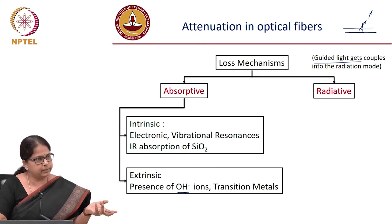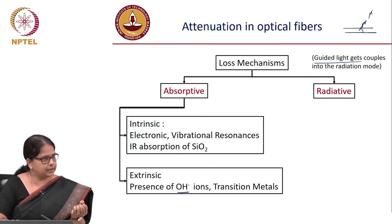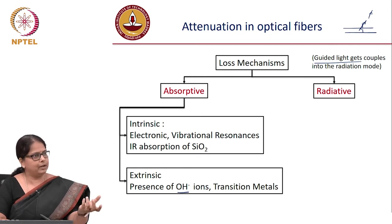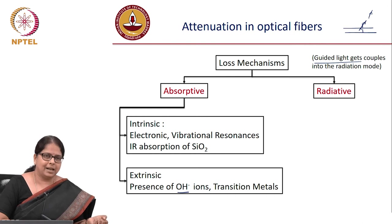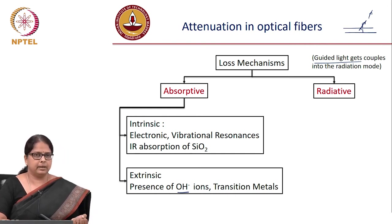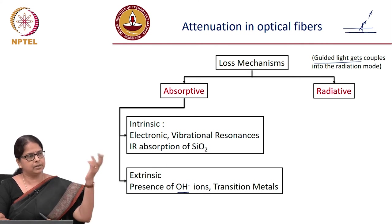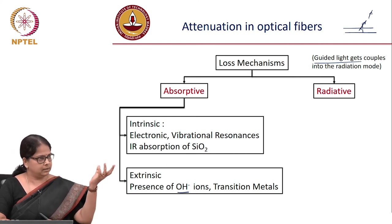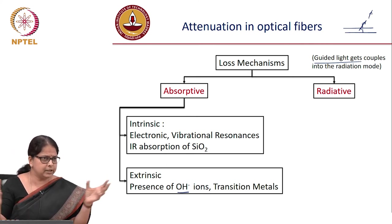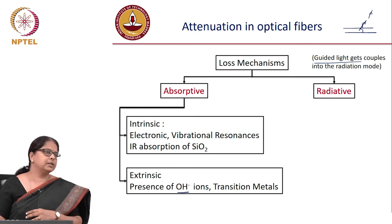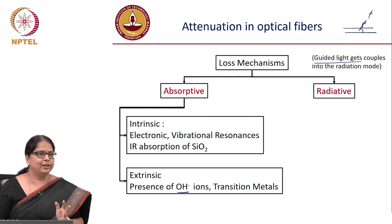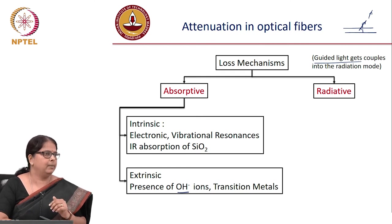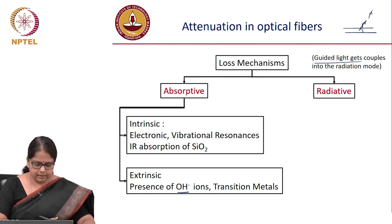Intrinsic loss cannot be avoided because the fiber must be made of SiO2 — whatever SiO2 absorbs, you have to accept. The goal was to minimize extrinsic loss: how to fabricate a fiber with minimum contamination. After trying different chemical processes, the process established around 30 years ago is essentially the same one used today to achieve minimum loss.